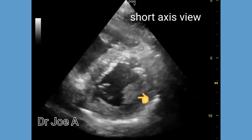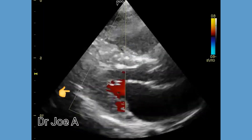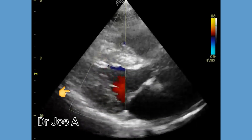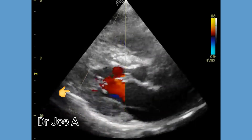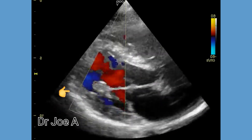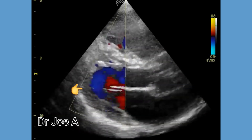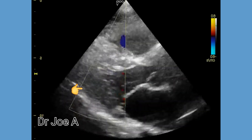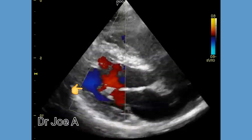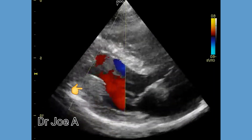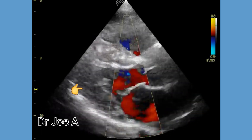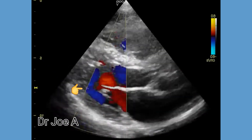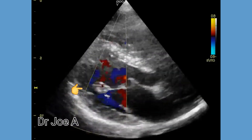In rare cases, papillary muscle hypertrophy may be associated with sudden cardiac death. Color Doppler of the mitral valve shows normal flow across the mitral valve, with flow around the hypertrophied papillary muscle. The final diagnosis is hypertrophied posteromedial papillary muscle, and further investigation may be needed to confirm the diagnosis.